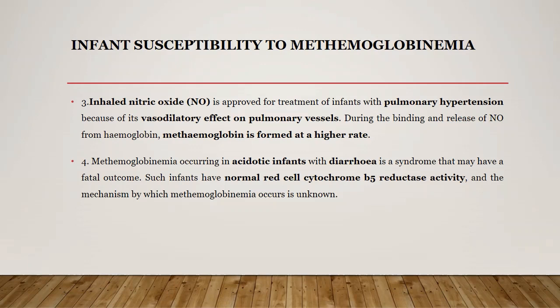The third cause for methemoglobinemia in infants is inhalation of nitric oxide. Nitric oxide is used as a line of treatment for pulmonary hypertension because of its vasodilatory effect on the pulmonary vessels. During the binding and release of nitric oxide with hemoglobin, methemoglobin is formed at a higher rate. Methemoglobinemia is also sometimes seen in acidotic infants with diarrhea — in such patients the activity of red cell cytochrome b5 reductase remains normal and the exact mechanism is unknown.